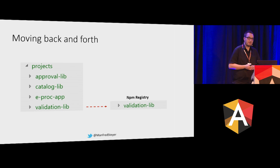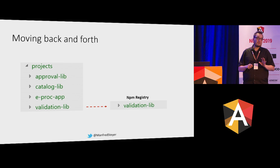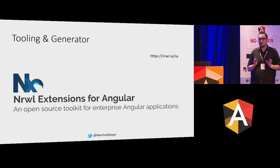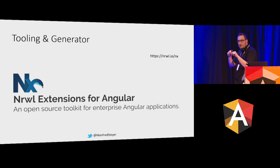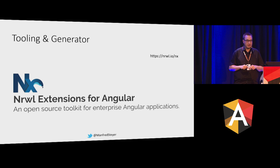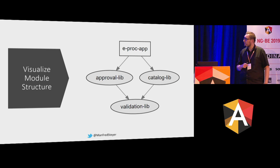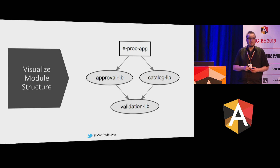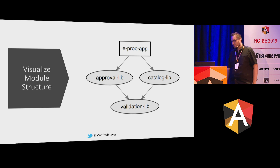If you like the idea of a mono repository, I really want to encourage you to have a look at NX. NX is what I'm calling the sugar dip on top of the Angular CLI. It enhances the Angular CLI with some very nice features that are very useful when going with mono repositories. For instance, you can visualize your library structure — see which library is accessing which other library — in order to prevent this intermingled situation.